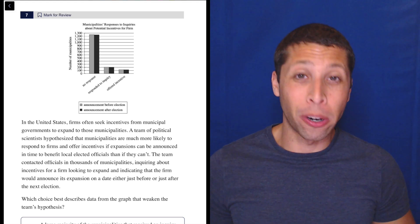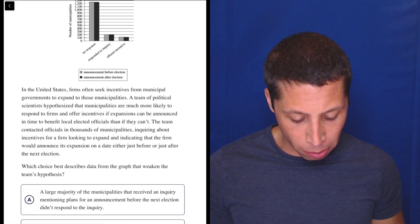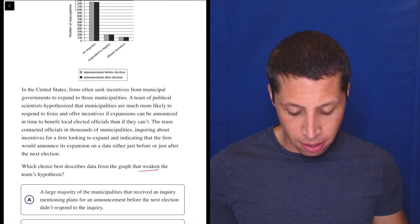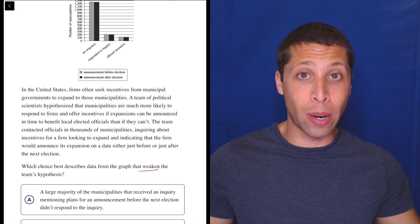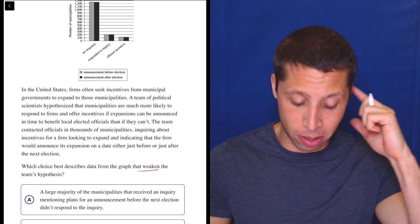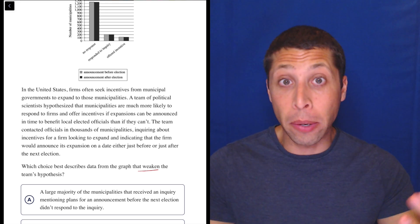This question really shows the power of dumb summaries. So first things first, though, be careful. Which choice best describes the data from the graph that weaken the team's hypothesis? That's weird. That's very unusual, just overall for questions, but especially for graph questions. But it's okay. Dumb summaries are going to help us. So let's get their hypothesis and then we'll flip it around.